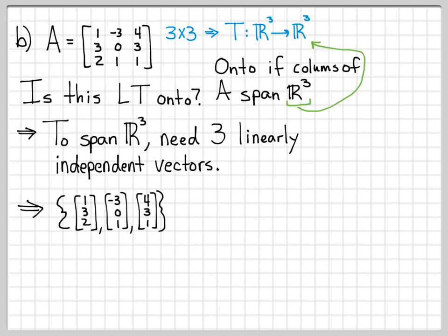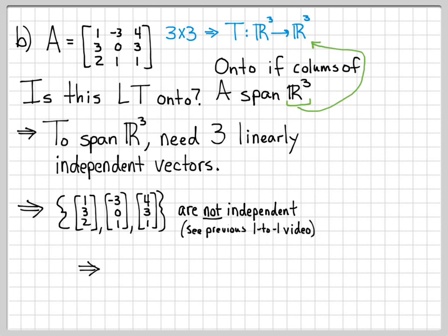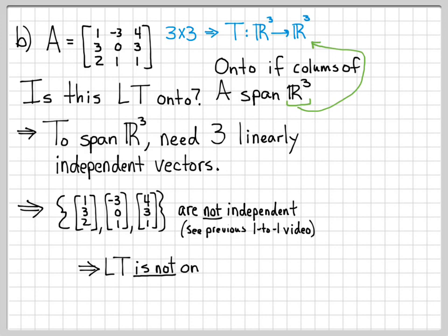These vectors are not independent. In the previous video, we constructed the augmented matrix for the homogeneous system and found an infinite number of solutions due to a free variable, implying the vectors are linearly dependent. Since the vectors are dependent, they do not span R3, so this linear transformation is not onto — we cannot reach every point in R3.